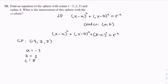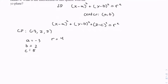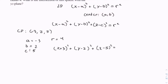And we have our radius r which equals 4. So we have x minus negative 3, which is x plus 3, squared, plus y minus 2 squared, plus z minus 5 squared, equals 4 squared, which is 16.